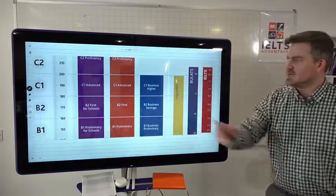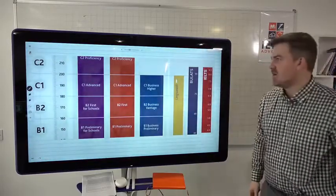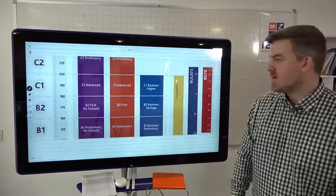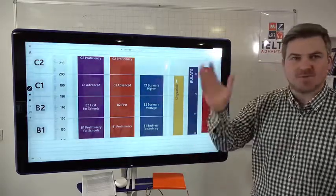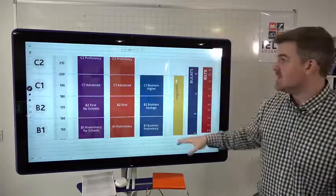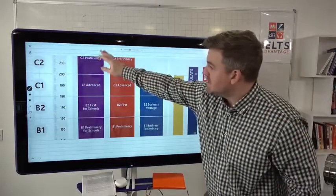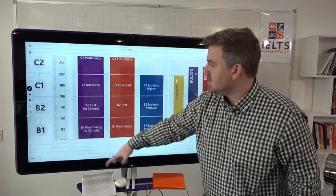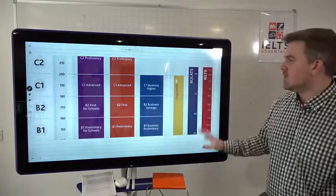These are all linked to this. So this is the CEFR, Common European Framework, and you can look this up. Just type in CEFR and you'll get the different levels of English. So you have C2, C1, B2, B1, and then it goes down to like A2, A1.